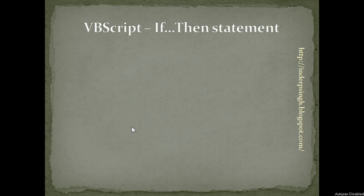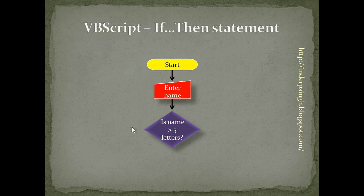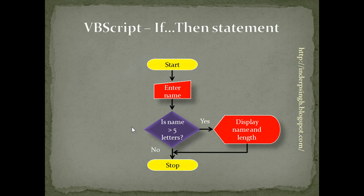Let us see the simplest form of the conditional statement, which is the if-then statement. Let's say we have to find out the length of a name. The flowchart for this problem: first we start, then we enter the name. It can be any name of any length. Then we find out the condition — is the name greater than 5 letters? If the name is more than 5 letters, the script displays the name and the length. If the name is not greater than 5 characters, it doesn't do anything; it just stops.